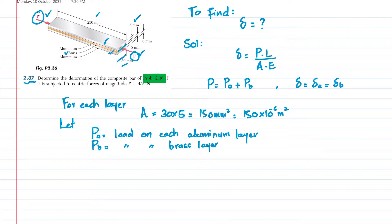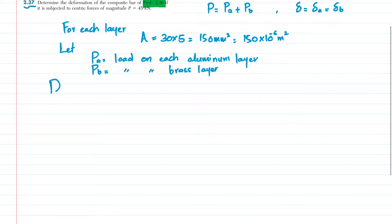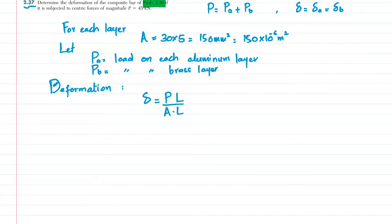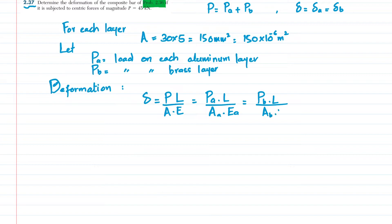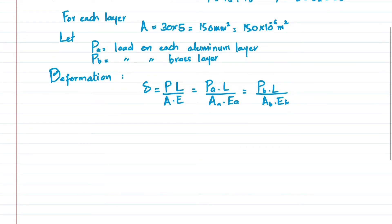The deformation delta = P·L / (A·E). Setting delta_a equal to delta_b: P_a·L / (A·E_a) = P_b·L / (A·E_b). Since all layers have the same area A and same length L, those cancel out.